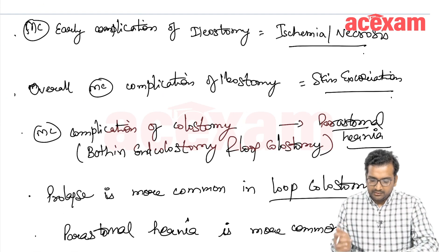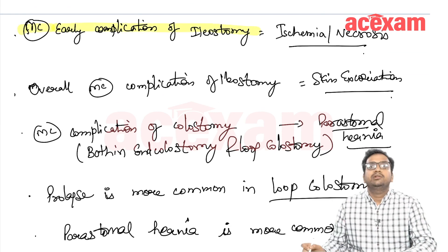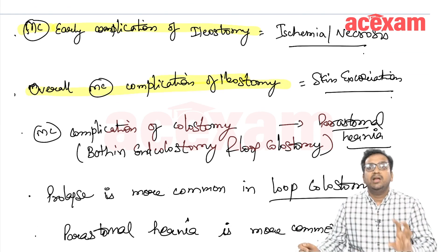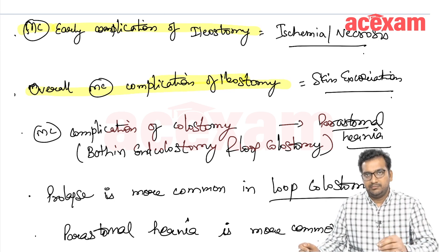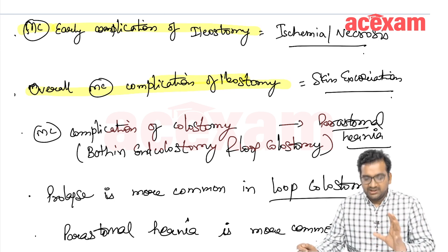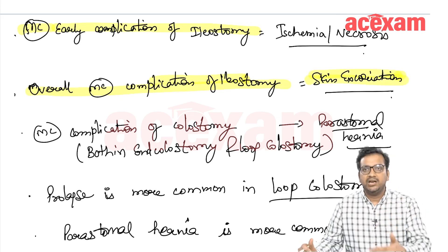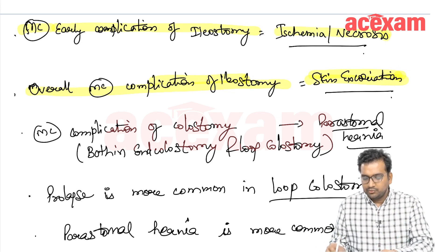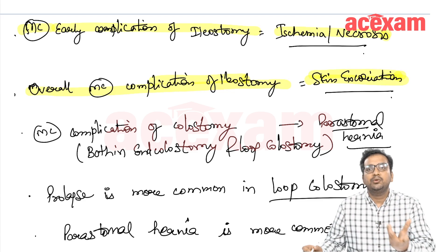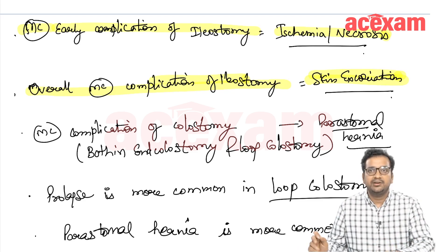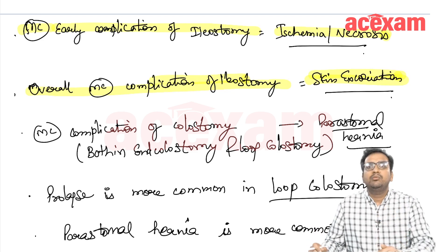Regarding complications: the most common early complication of ileostomy is ischemia or necrosis of the stoma, due to twisting of the mesentery or edema. The overall most common complication of ileostomy is skin excoriation, because the ileostomy fluid is liquid and causes peristomal skin excoriation.